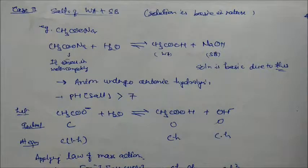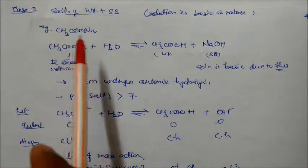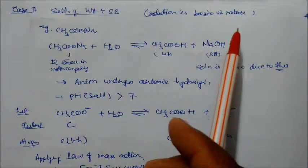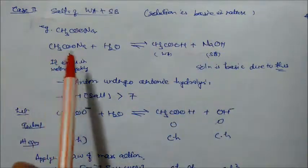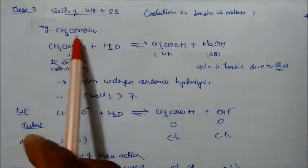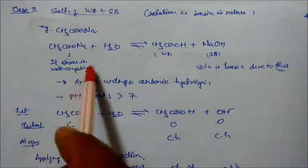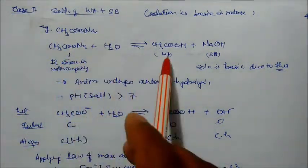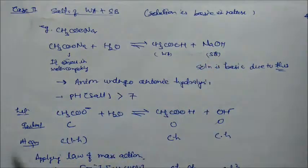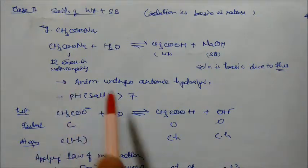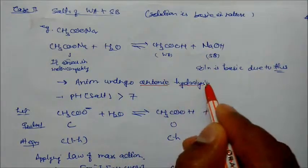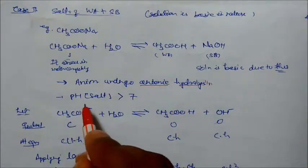Case 2: Salt of weak acid and strong base — the solution will be basic in nature (pH > 7). Taking sodium acetate as an example: it consists of a strong base and weak acid. When it reacts with water it gives a weak acid; since salts are strong electrolytes they ionize completely. This process is called anionic hydrolysis, and pH > 7.